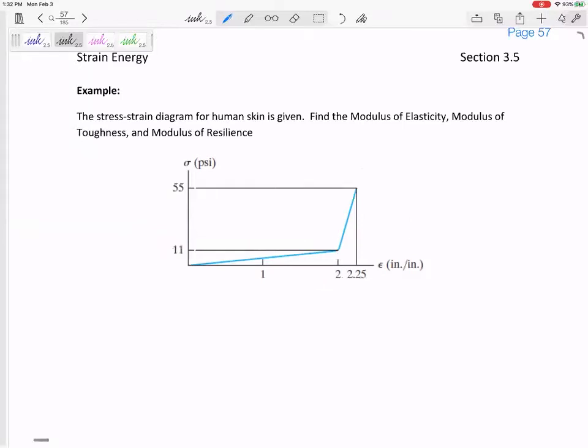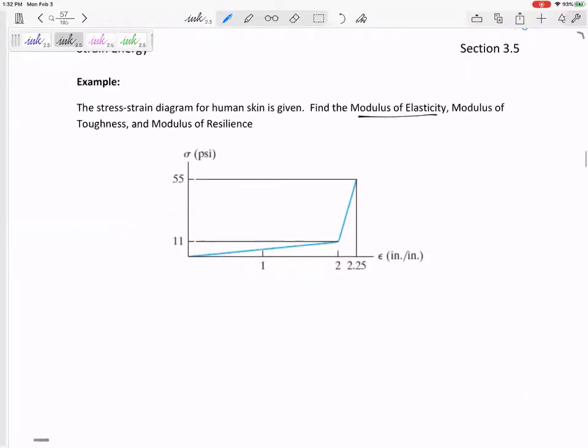Let us find the modulus of elasticity. This is really a question on definitions. Modulus of elasticity E is the slope of the elastic curve. Slope is rise over run, so this is 5.5 - I need units. This was 11 psi, this is inch per inch, it's really unitless, so this is still psi.